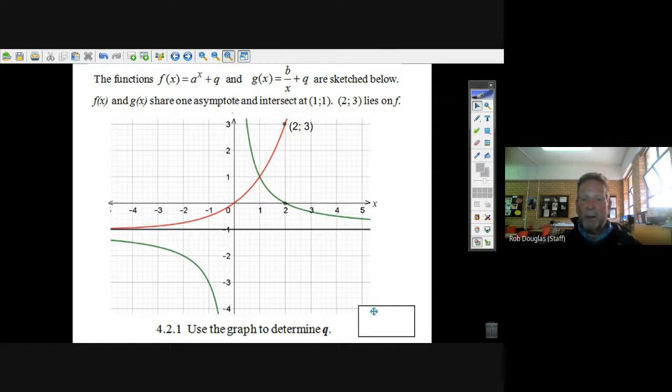Okay, now, the first thing they do is they say, use the graph to determine q. Okay, that's q right there. Oh, that's the same for both of them. That's this horizontal asymptote. Well, that number, there's minus two. It's minus one. I'm looking at it. So it's so easy. It's just y equals minus one.